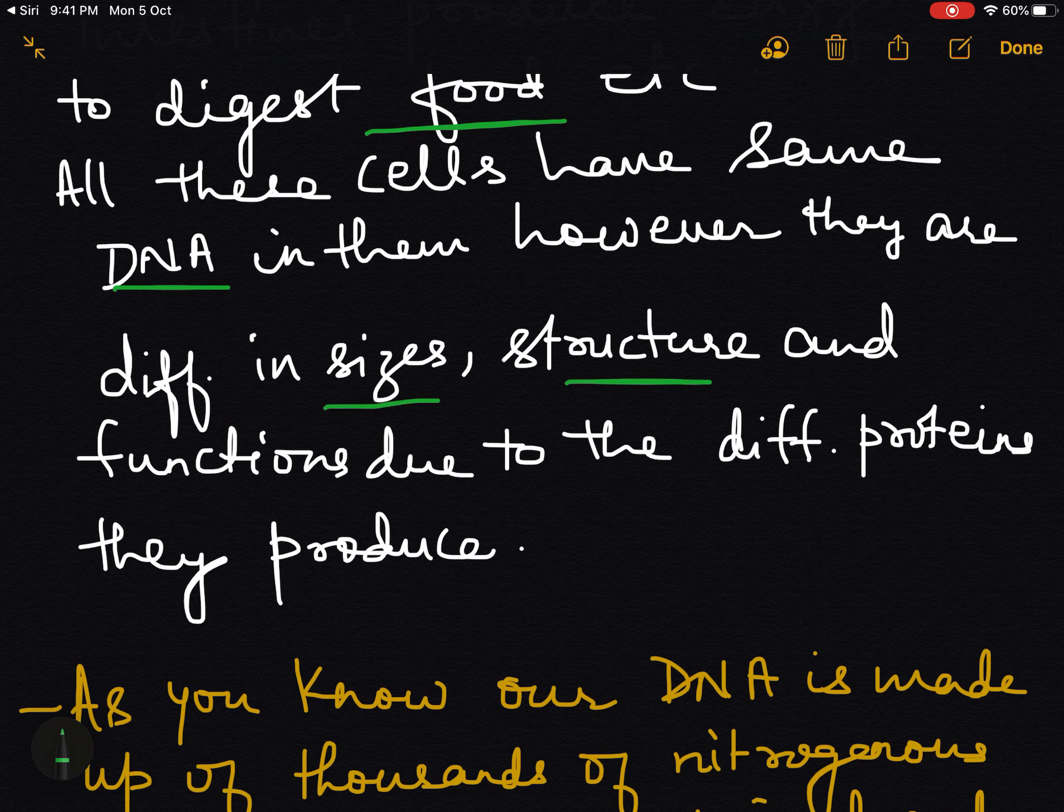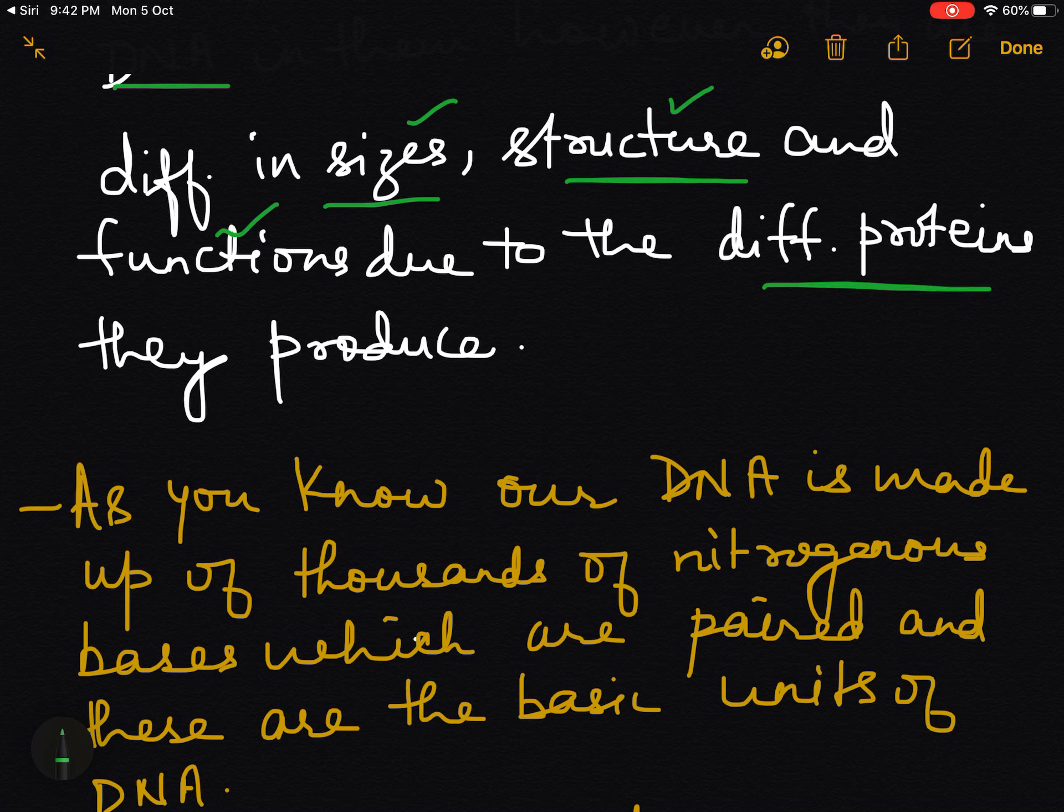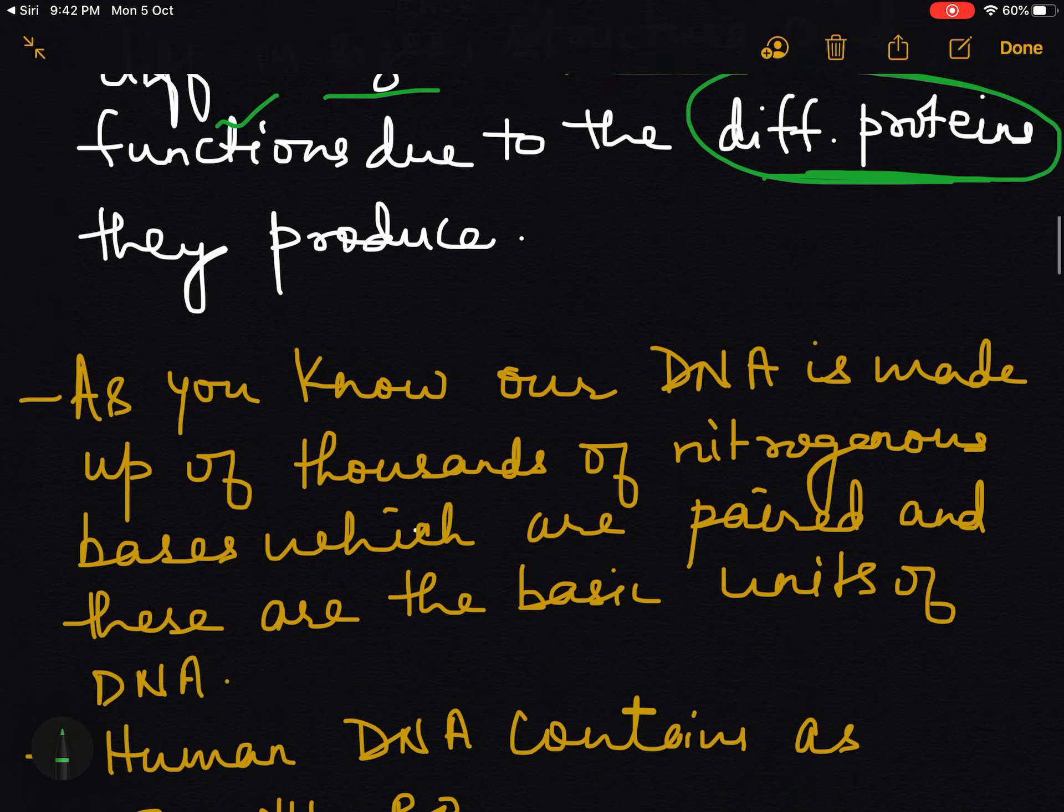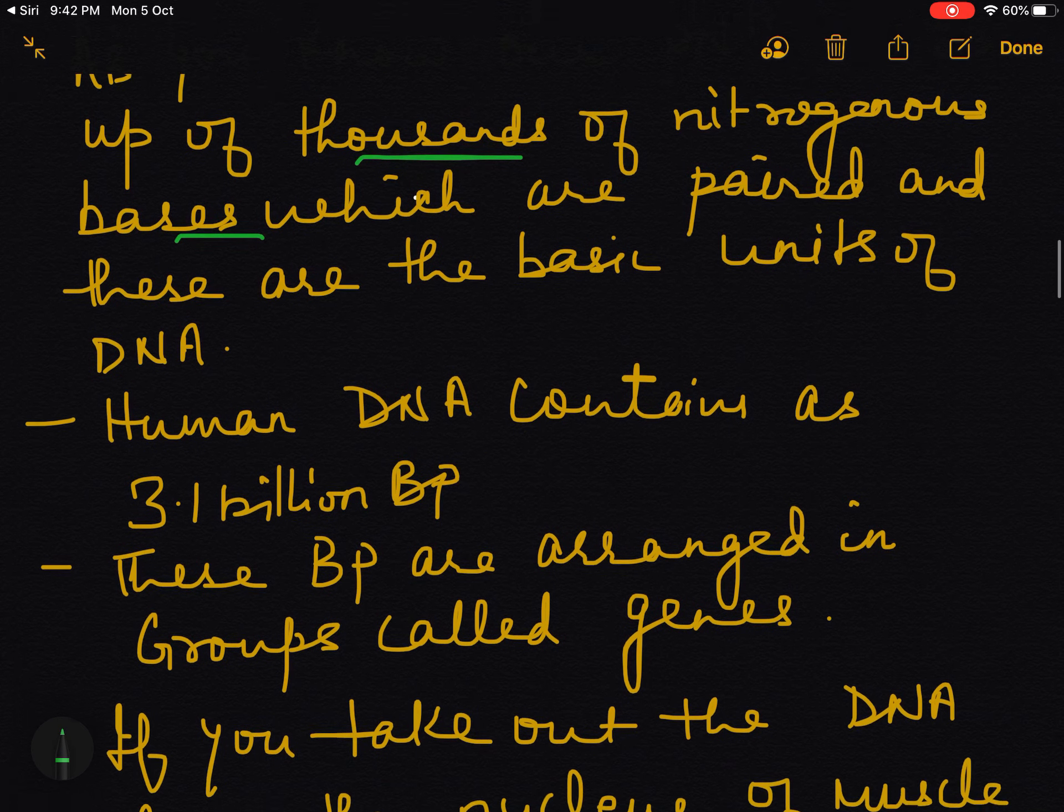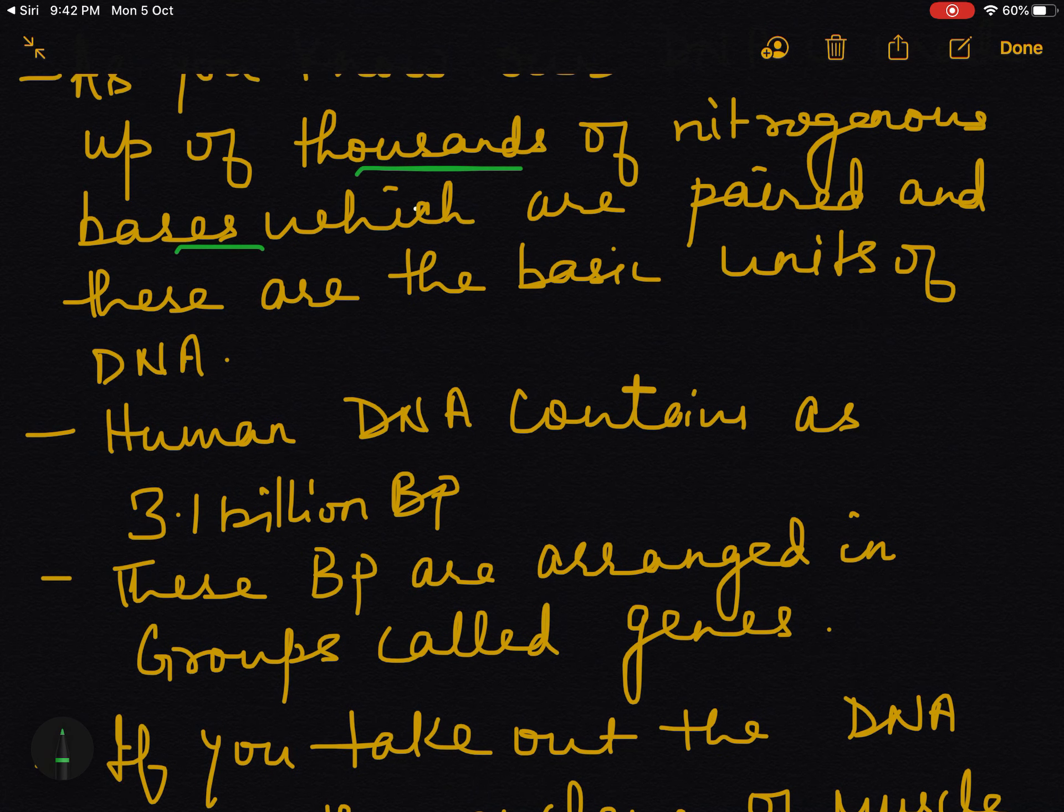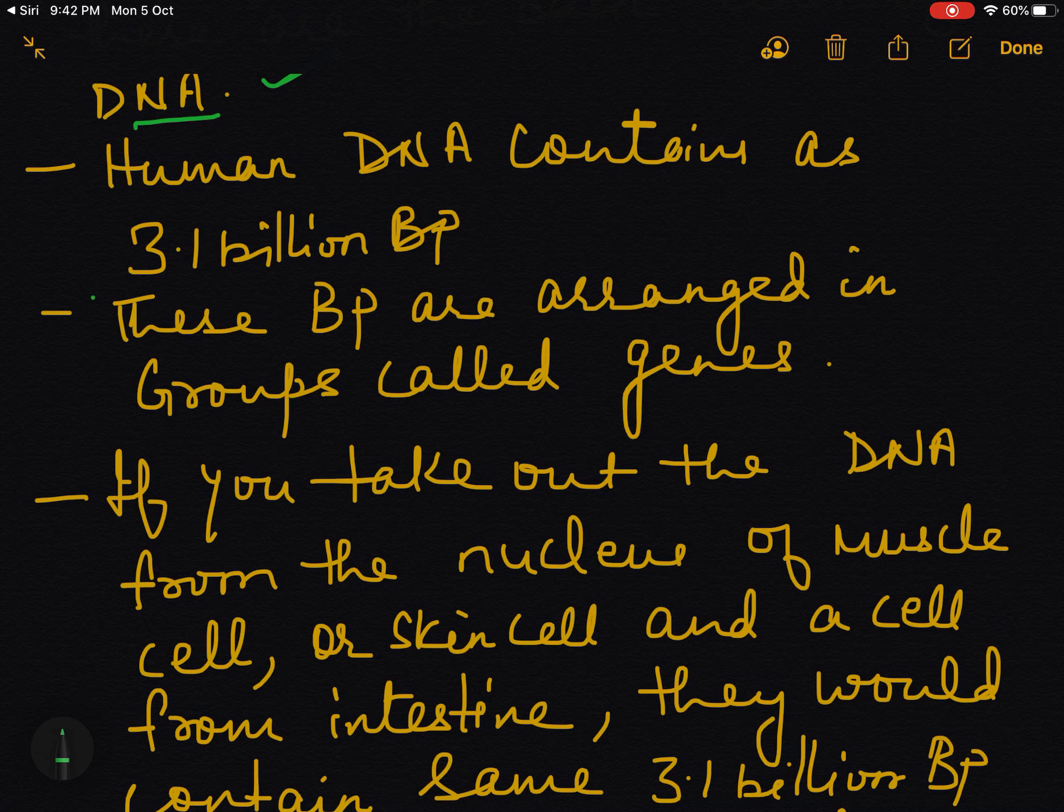All the cells in the body have same DNA in them, but still they are doing different functions, have different sizes and structures. Why does this happen? Why is every cell having the same DNA but they have different shape, size, structure, and function? The reason is that they produce different proteins, and due to these different proteins they show different sizes, structure, and functions.